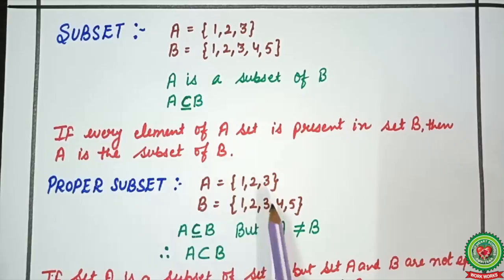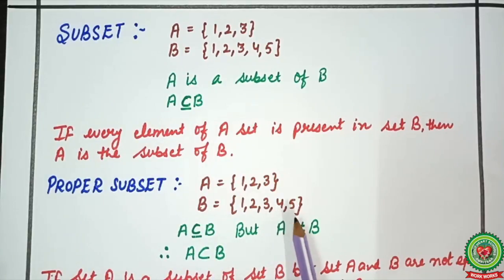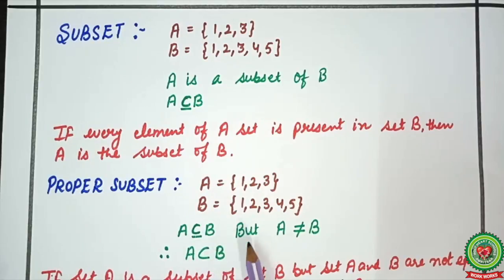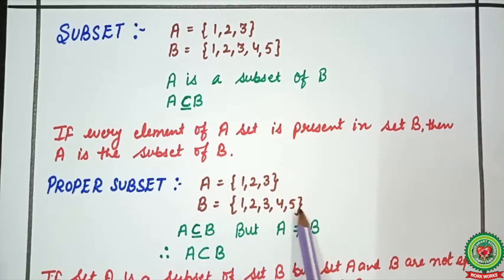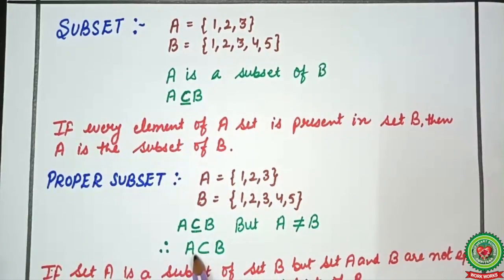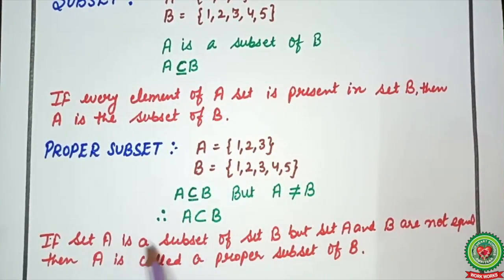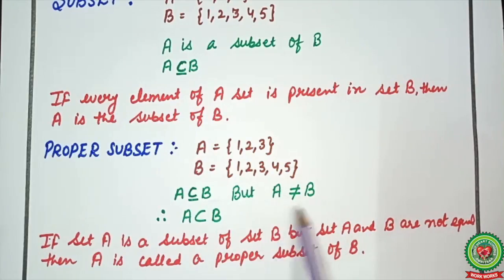Next we will talk about proper subset, taking the same example: A = {1, 2, 3} and B = {1, 2, 3, 4, 5}. A is a subset of B, but A is not equal to B — A has 3 elements whereas B has 5 elements. So A is the proper subset of B. This is the sign for proper subset. We can make a definition: if set A is a subset of B but A and B are not equal, then A is called a proper subset of B.